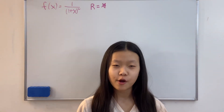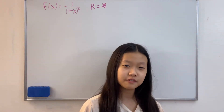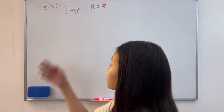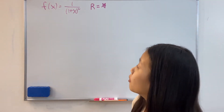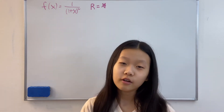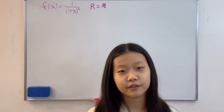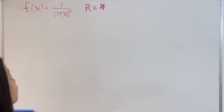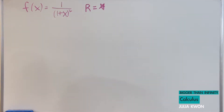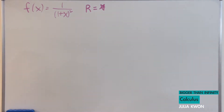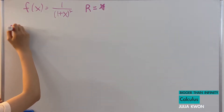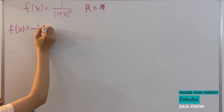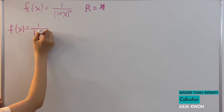Hello everyone. In this video I'm going to be finding the power series representation for the function 1 divided by 1 plus x squared and also determine the radius of convergence. To find the power series representation for this function, I'm going to use another function which is going to be 1 divided by 1 minus x.